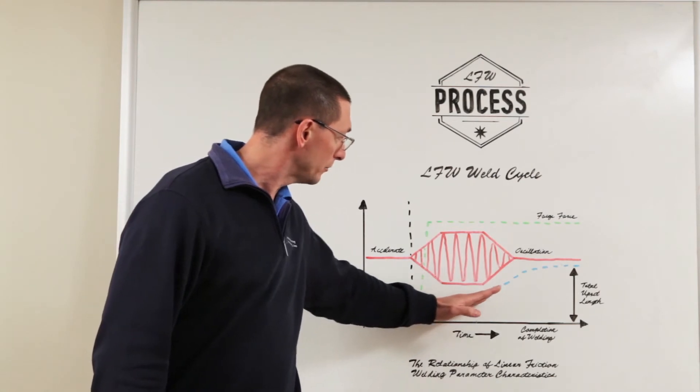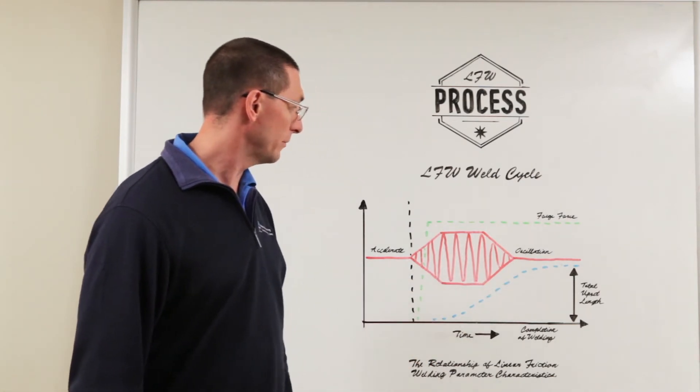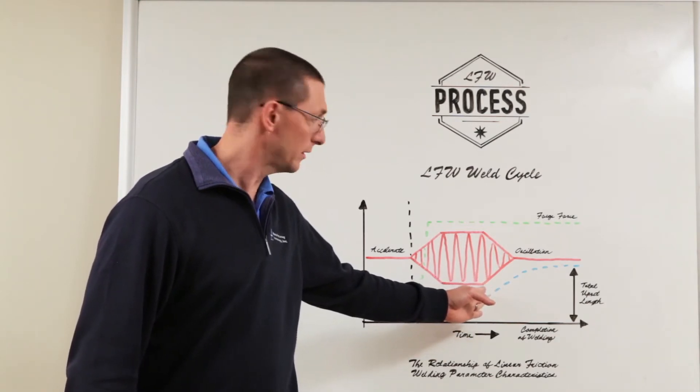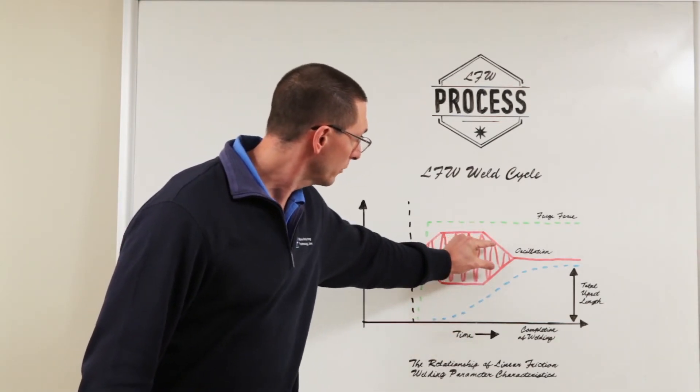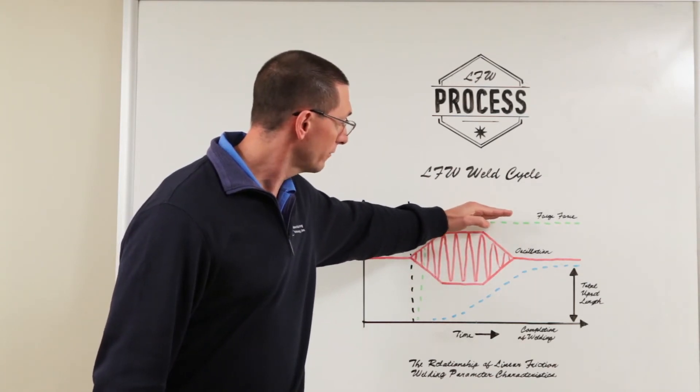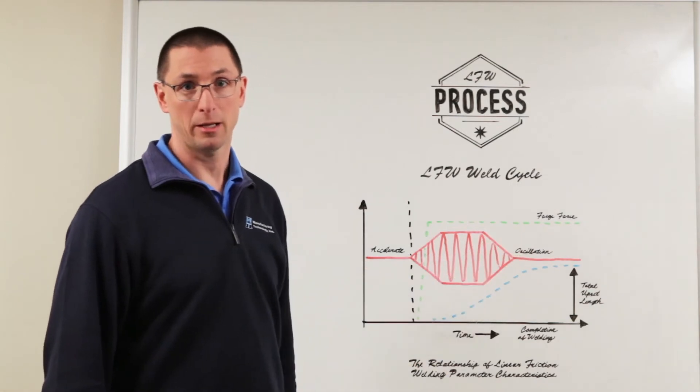We're going to hold that power input as we start to upset material represented by the blue line, and as soon as we get to a certain amount of upset based on the application, we're going to ramp the frequency and amplitude down to a final position, maintain our forge force, and we'll have the resultant amount of upset.